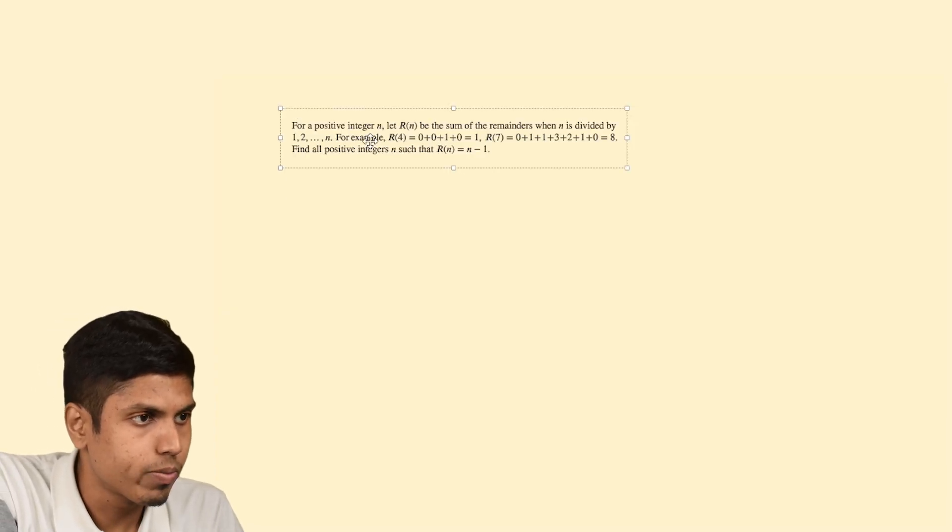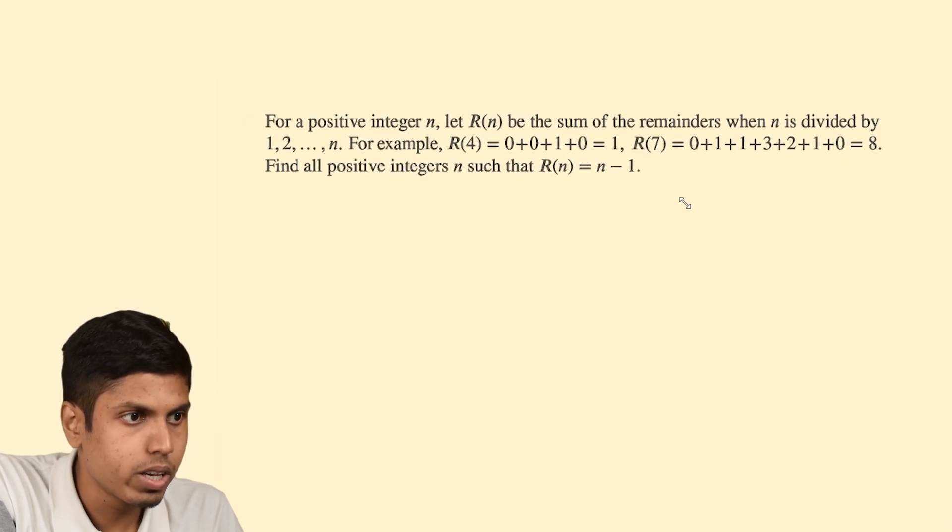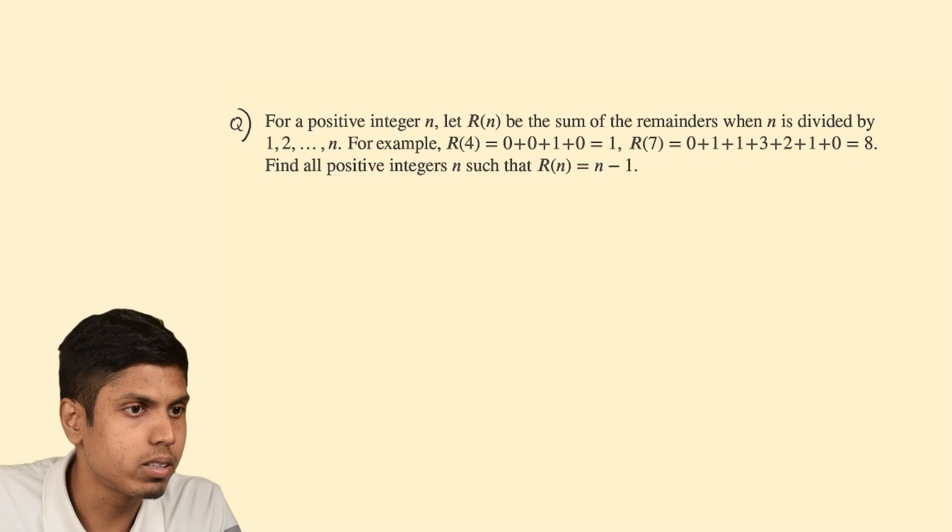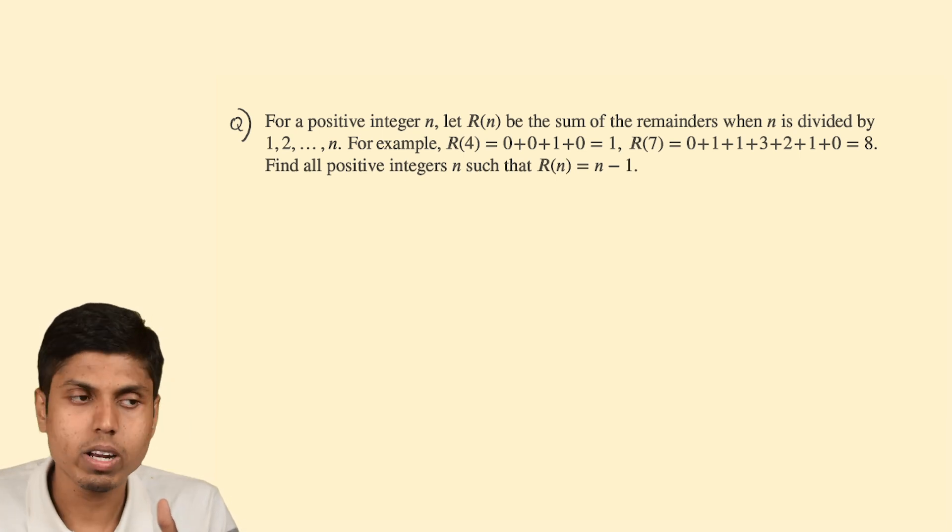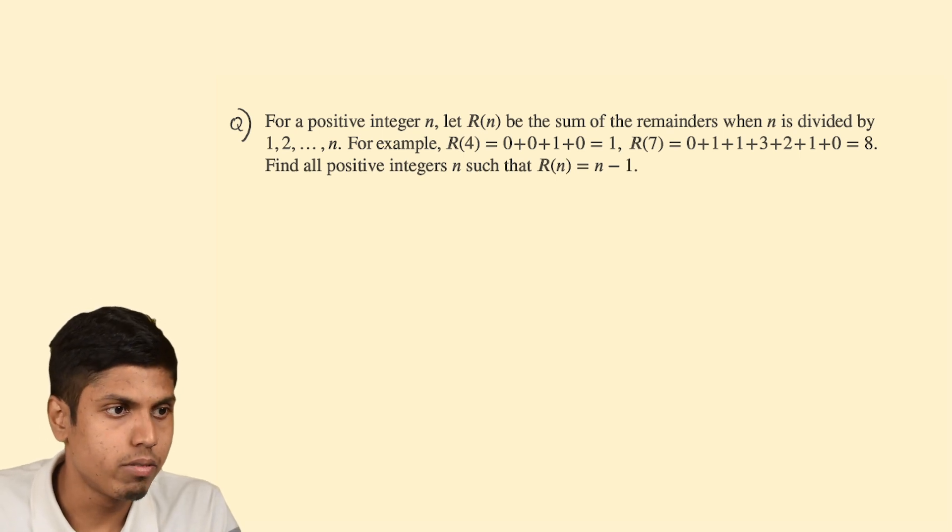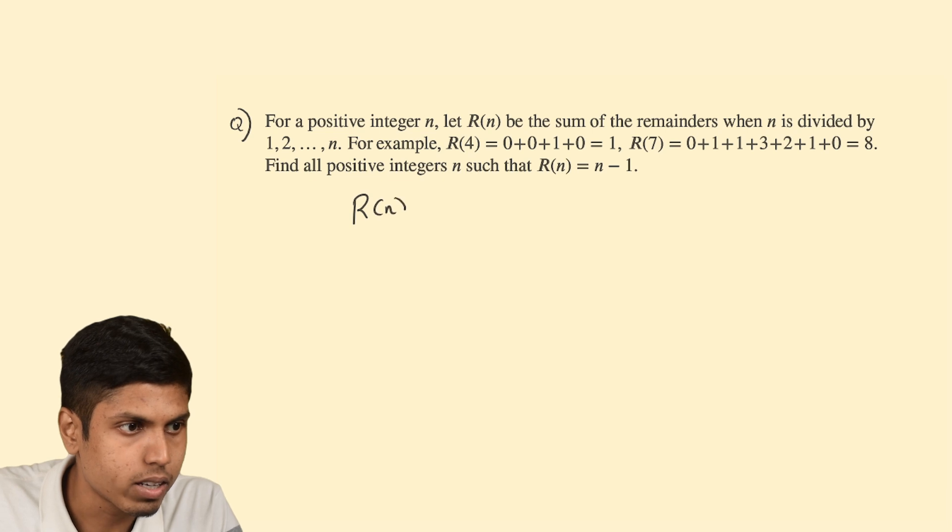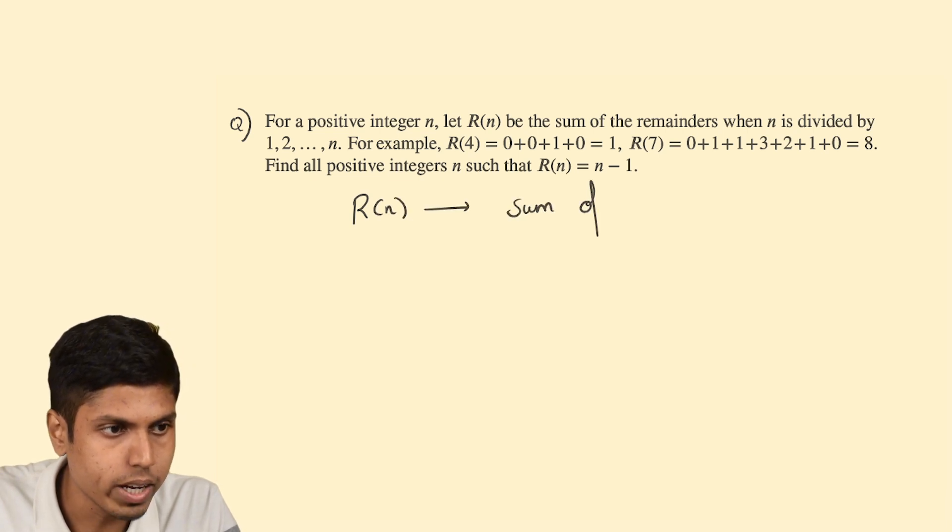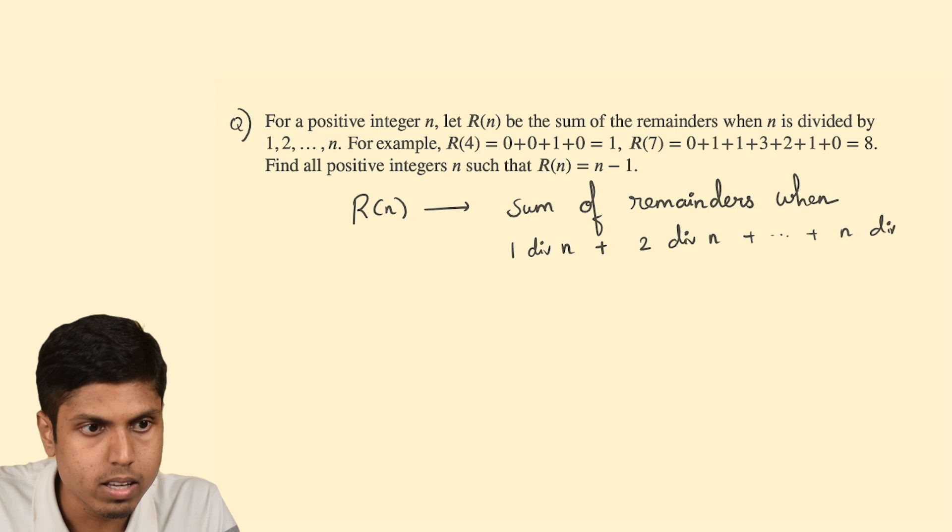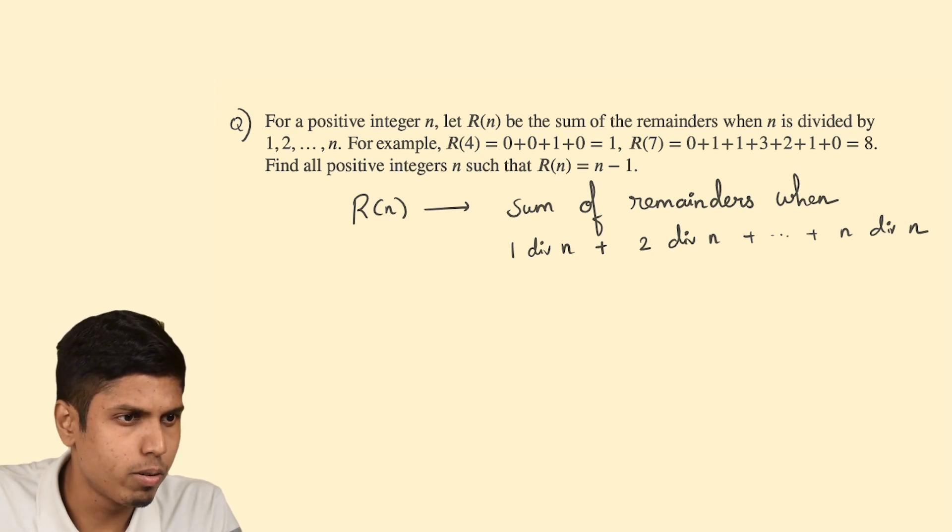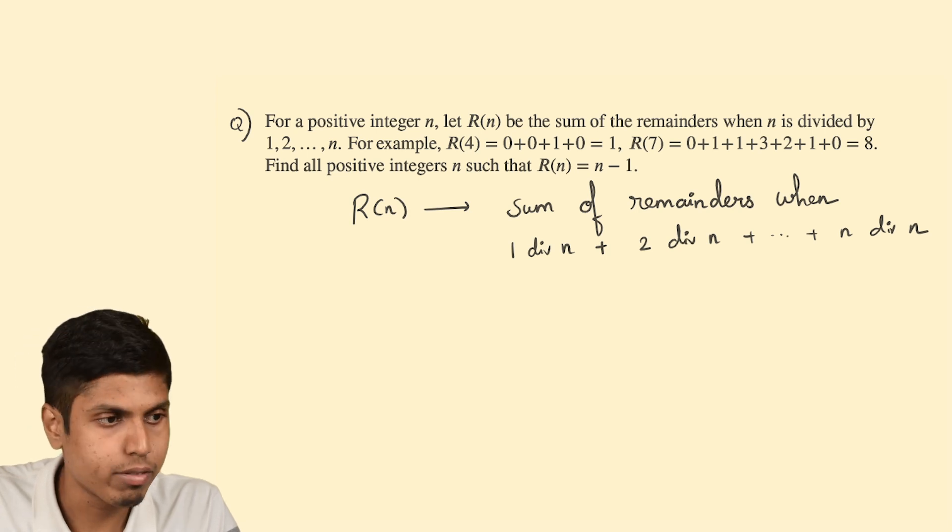Here is problem number 2 of RMO. You are given a function R(n) that takes natural numbers to another natural number. R(n) functional value can also be 0 along with natural numbers. We have to figure out the values of n for which R(n) equals n minus 1. The function goes like this: R(n) is the sum of remainders when 1 divides n plus 2 divides n, and so on till n divides n. We add all these remainders and the resultant value will be R(n). We have to figure out the value of n such that R(n) equals n minus 1.